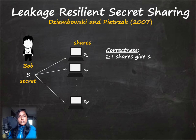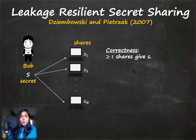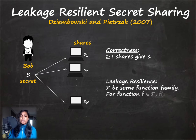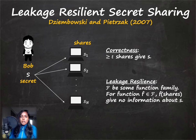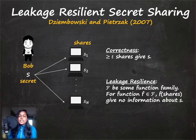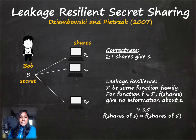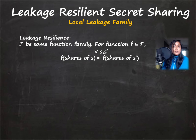This naturally led to the advent of leakage resilient secret sharing schemes, introduced by Dziembowski and Pietrzak in 2007. Under the same setup with a similar correctness guarantee, we now seek something stronger than just privacy, called leakage resilience. Instead of saying that T minus one shares look close, I consider some targeted function family F and pick some function from this family. Rather than saying T minus one shares are close, I want that F applied on all N shares gives no information about S. This is captured by saying that for any two distinct secrets S and S′, F applied on shares of S looks close to F applied on shares of S′.